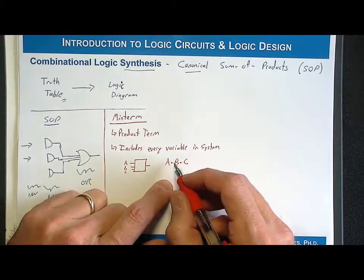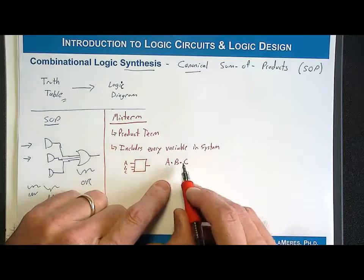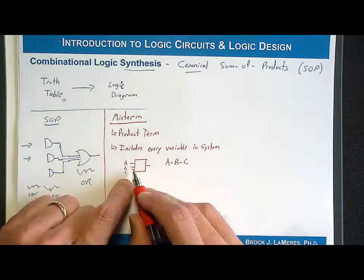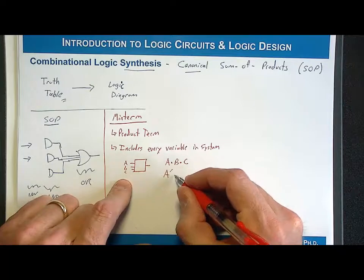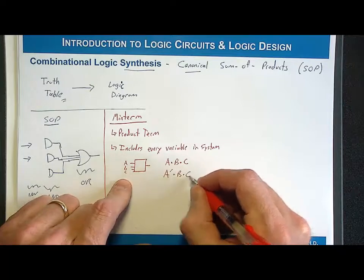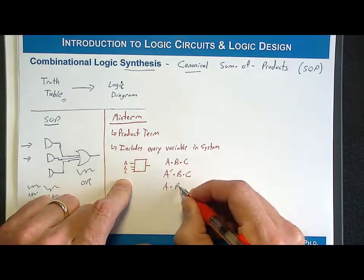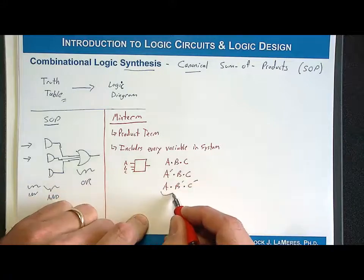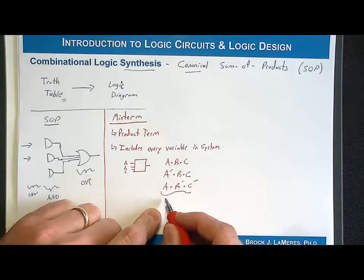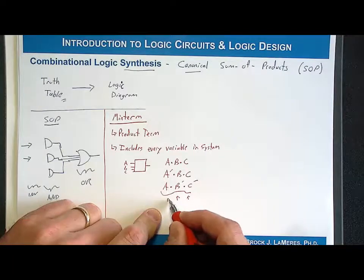What I mean by that is if we had a system with inputs A, B, and C, then a min term would have to have A, B, and C in its product term. What is different about each min term is whether or not the input variables are inverted. For example, A, B, C would be a min term for a three-input system, as would A̅, B, C, or A, B̅, C̅ — each product term includes all input variables A, B, and C.